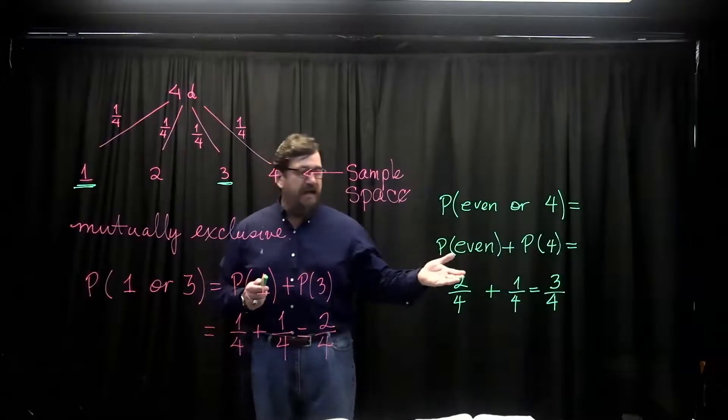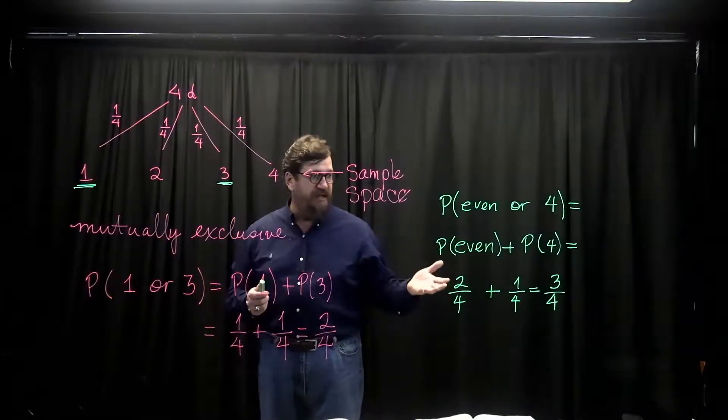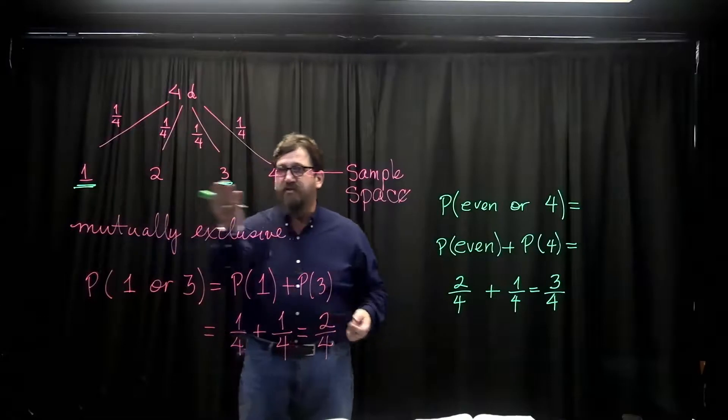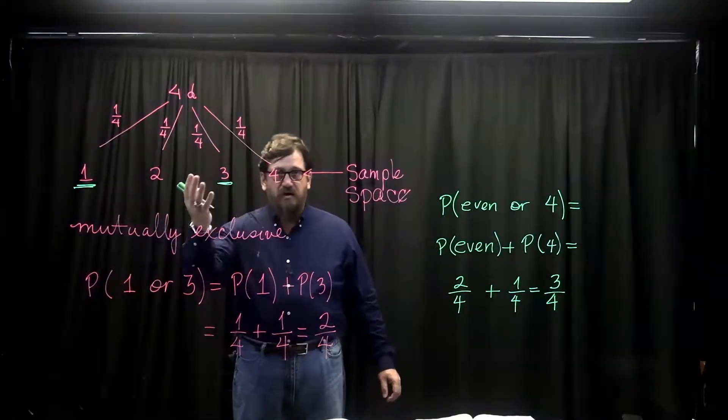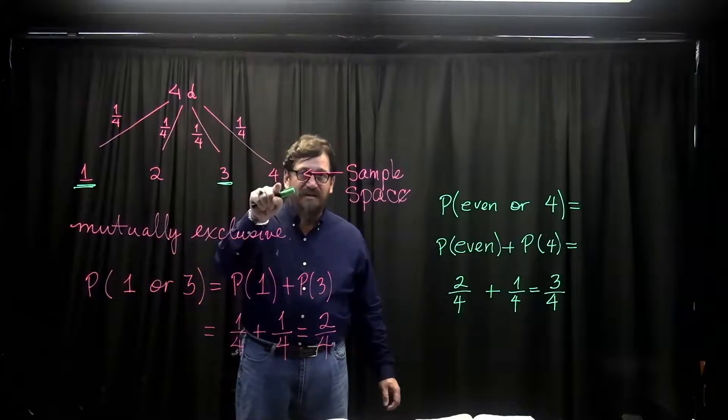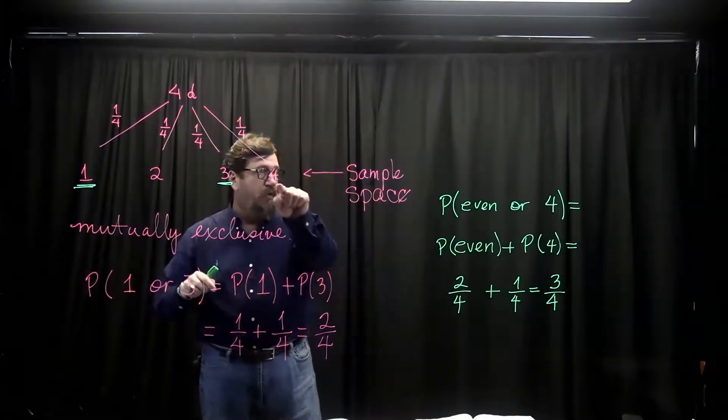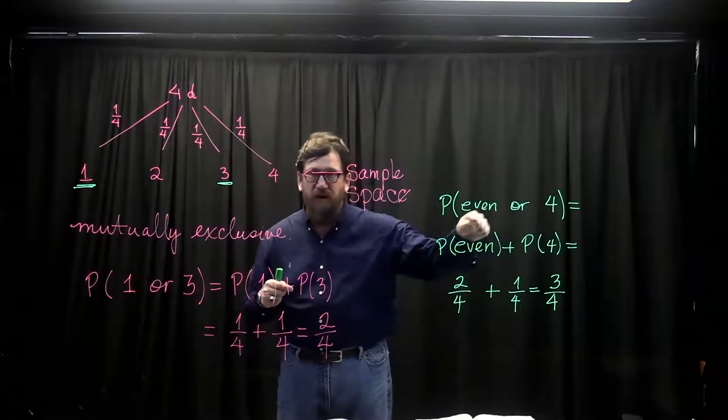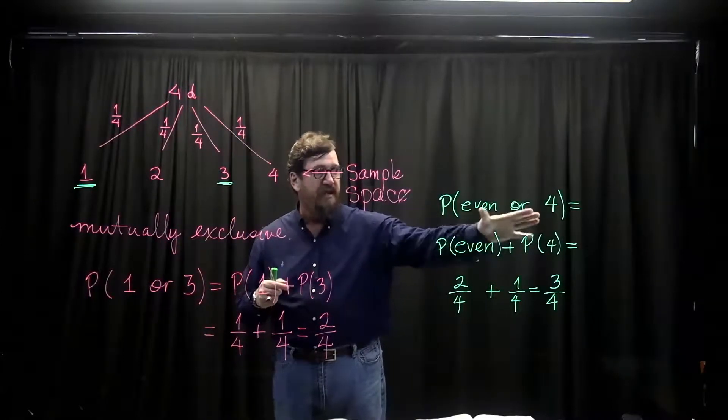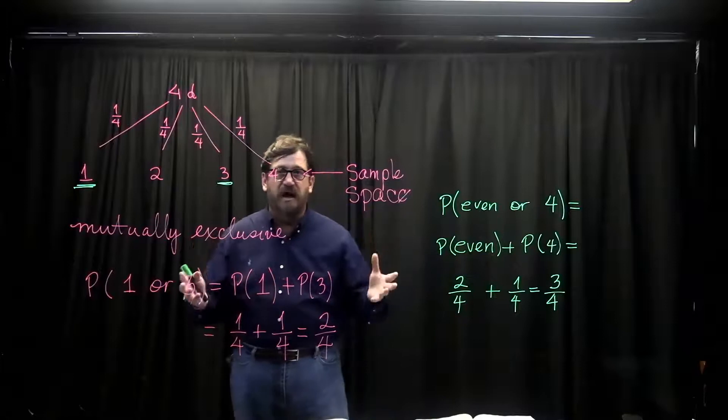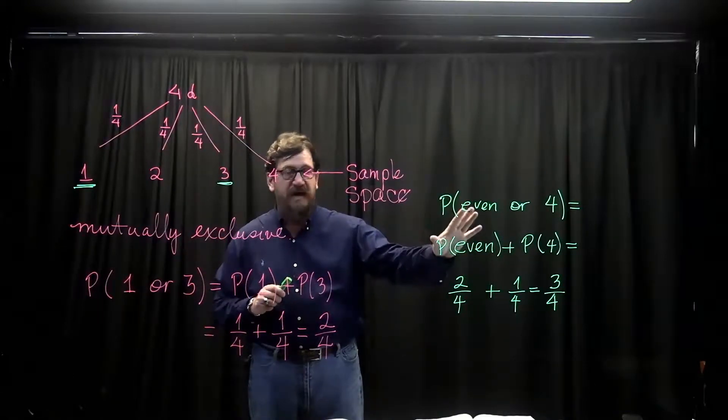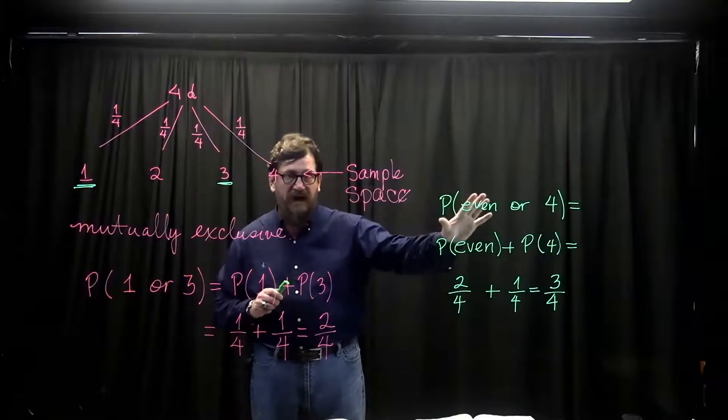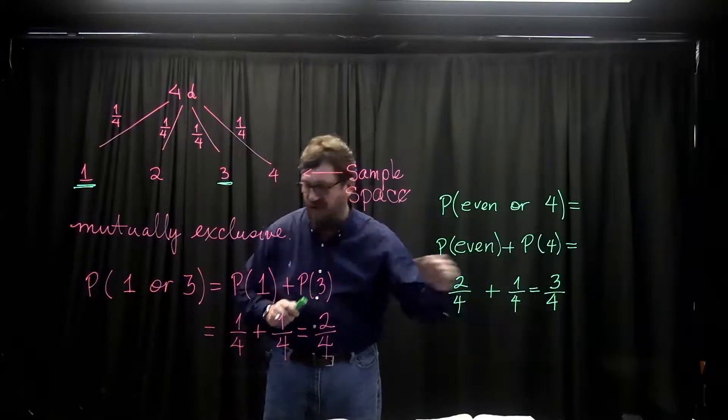But is that the correct answer? And the answer is no. Because there's not three evens, I counted this guy twice. The four happens to belong to both events. Therefore, these events are not mutually exclusive. What we have to do now is figure out how to handle this problem, this situation.